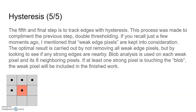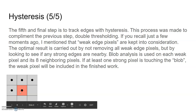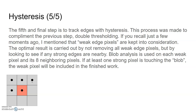The fifth and final step is to track edges by hysteresis, made to complement double-thresholding. Weak edge pixels are kept in consideration. The optimal result is carried out by not removing all weak edge pixels, but by looking to see if any strong edges are nearby. Blob analysis is used on each weak pixel and its 8 neighboring pixels. If at least one strong pixel is touching the blob, the weak pixel will be included in the finished result. So if the selected pixel has any of its 8 neighbors considered a strong edge value, it will be included in the final result.